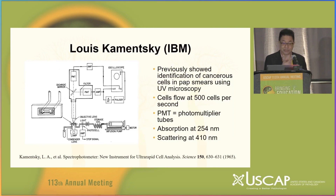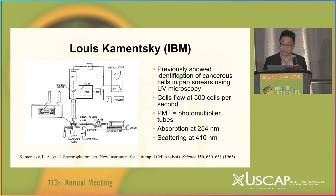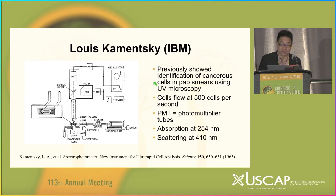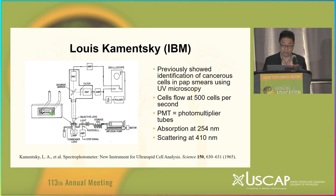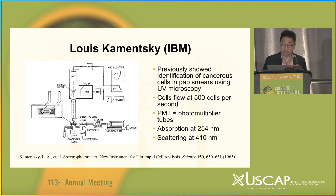The story continues. Louis Kamensky was working at IBM and was extremely interested in the analysis of cells. He had previously looked at cancer cells in pap smears and used UV microscopy to characterize them. He created a system using a pump to pass cells through a flow cell. Using a lamp, he could capture two different spectral emissions — one at 254 nanometers, which is absorbed by DNA — and simultaneously looked at scattering at 410 nanometers.